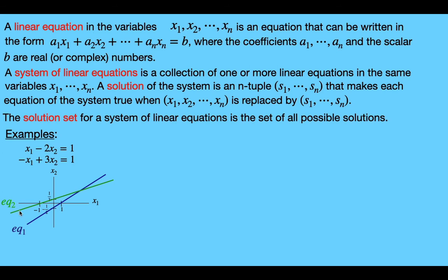There's only one point that lies on both of these lines, and it's the single intersection point. So our solution set is the single-element set containing that point. There's exactly one solution for this linear system of equations.